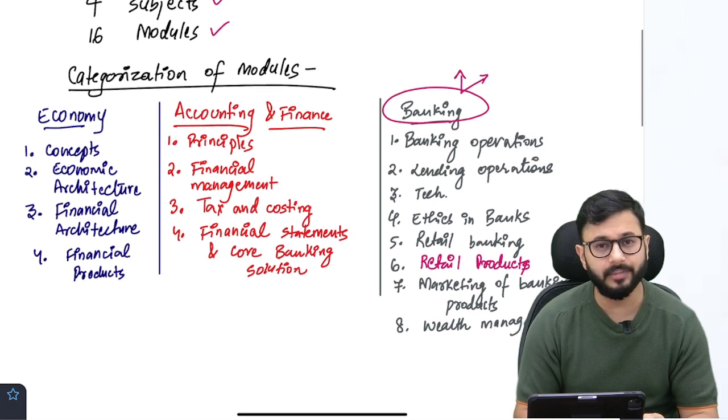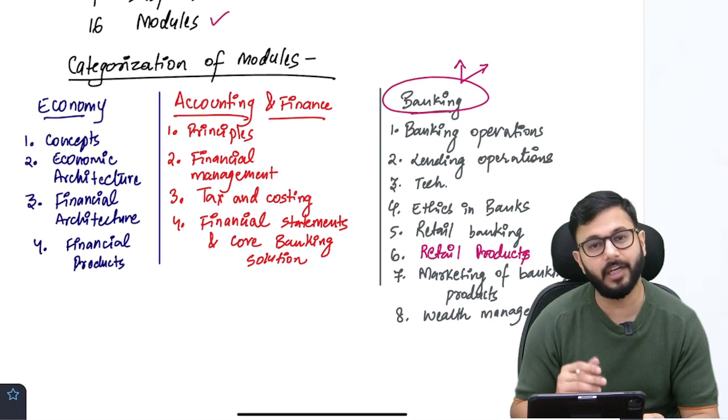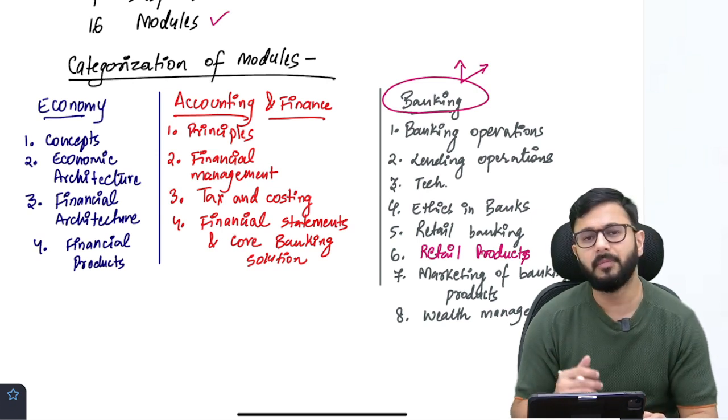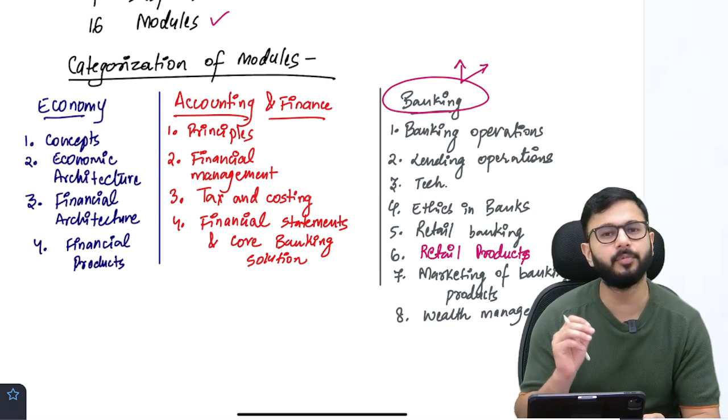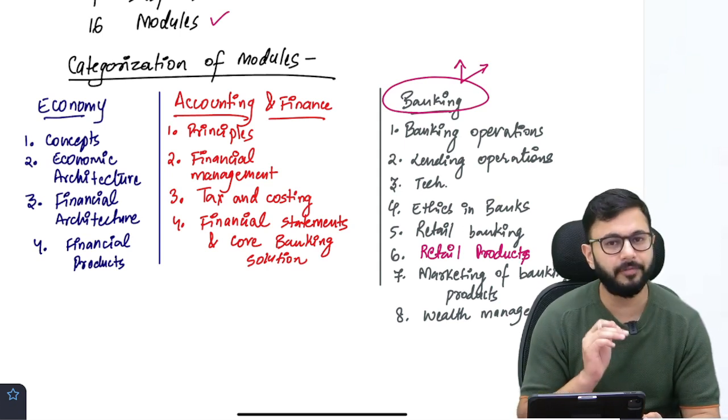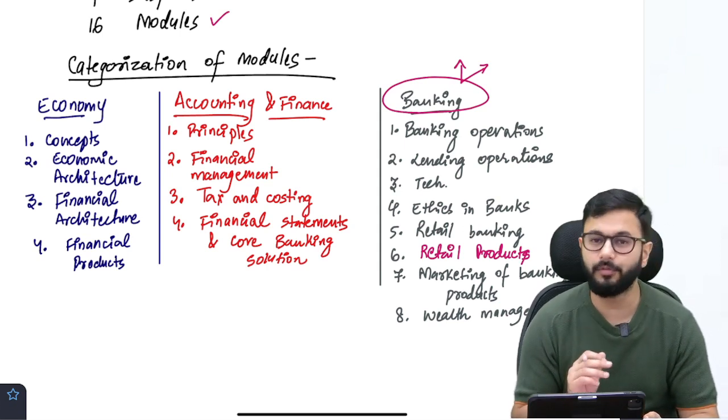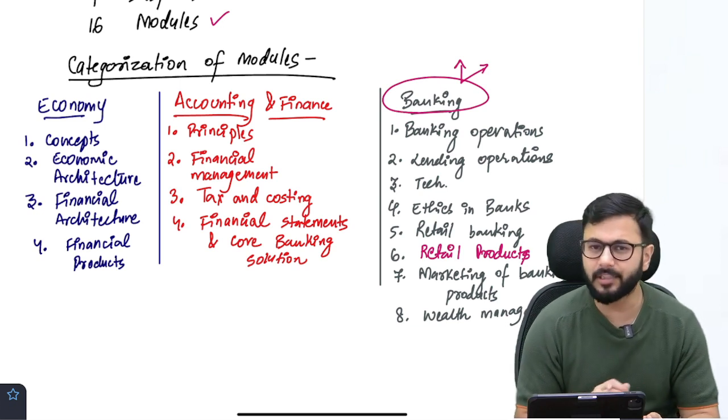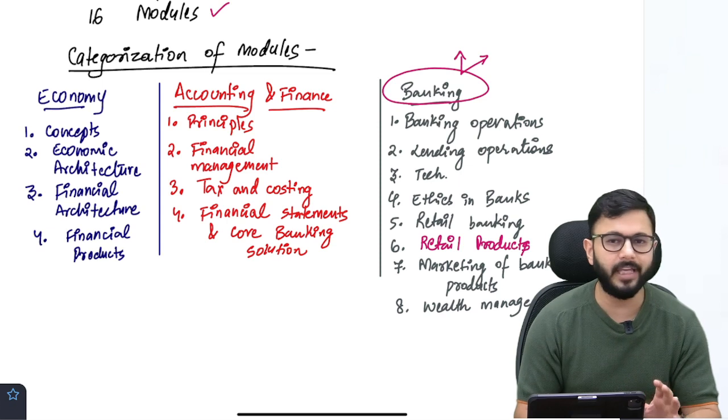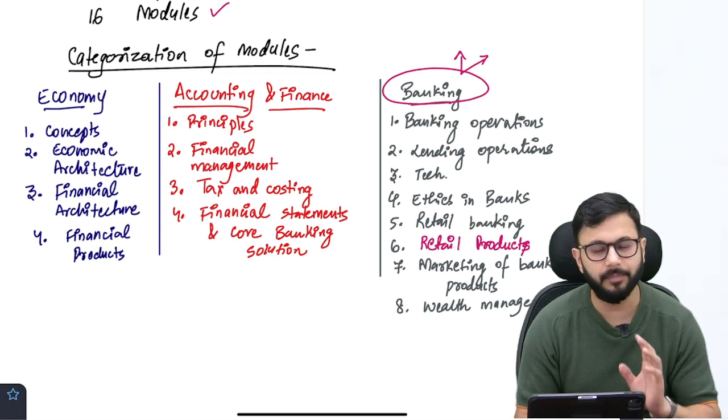There are a total of 16 modules which I think are equivalent to 16 subjects so you have to read a lot of subjects but the good thing about JAIIB is that all these subjects have to be read only at the shallow level, at a top level, you do not have to get into details or depth of these subjects. So if you have a basic conceptual understanding of these subjects, of these modules, it is going to be a cakewalk for you to clear the exam in your first attempt itself.